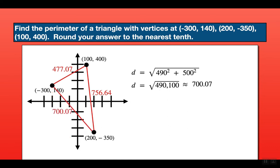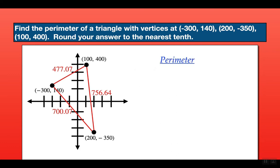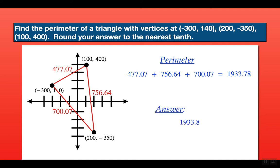Now we find the perimeter by adding the three side lengths. Adding 477.07 plus 756.64 plus 700.07 gives us 1,933.78. It says round to the nearest tenth, so our final answer is 1,933.8 units. That is the perimeter of the shape.